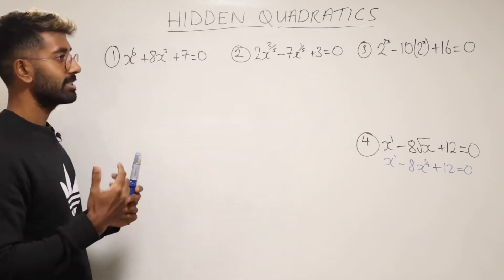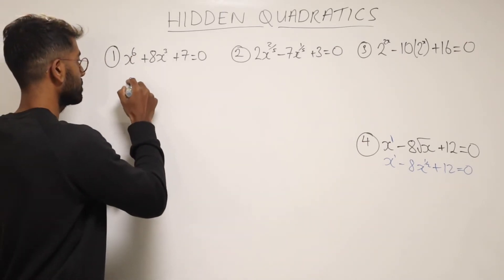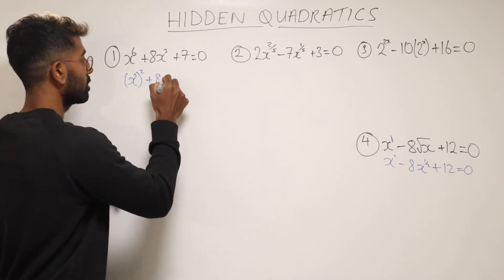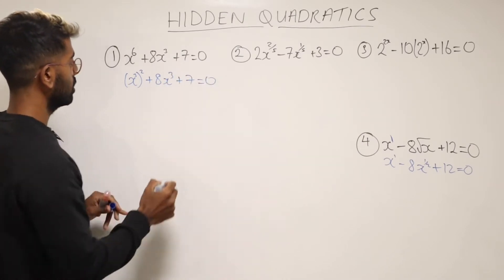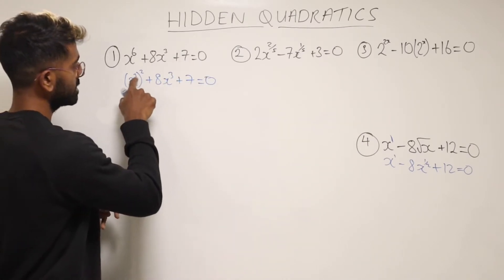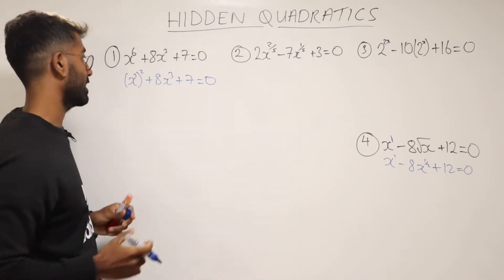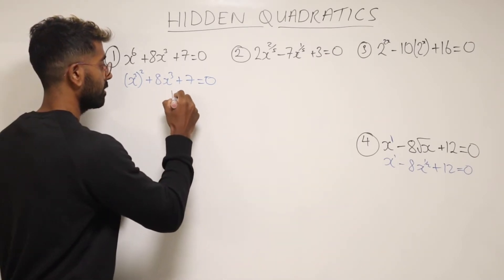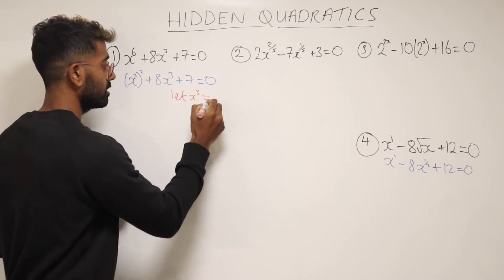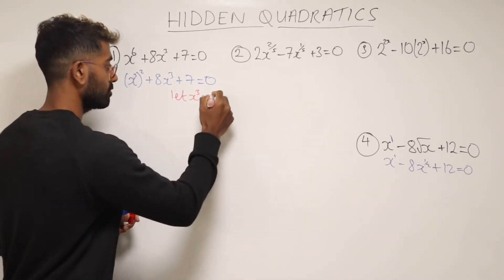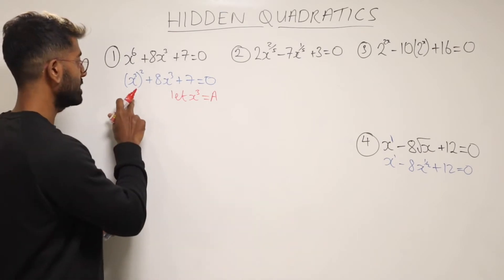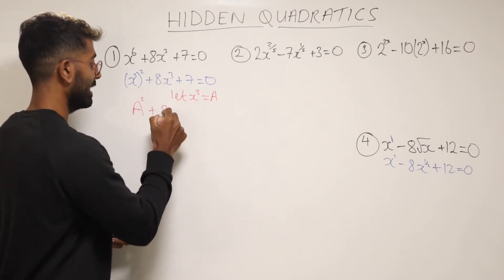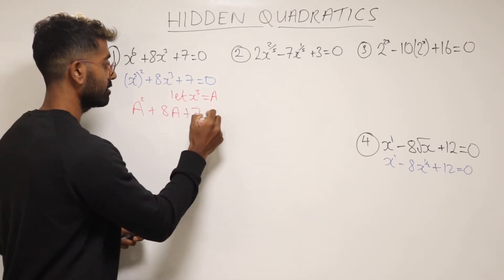Now, because we've got x to the power of 6, we can rewrite that as x cubed to the power of 2. Because the 3 times 2 will give me 6 anyway. So this is equivalent to x to the power of 6. Now, once we've done that, we can go with this and say let x to the power of 3 equal some random letter. I'm just going to call it capital A for now. So that means here I can put A squared plus 8A and then plus 7 equals 0.